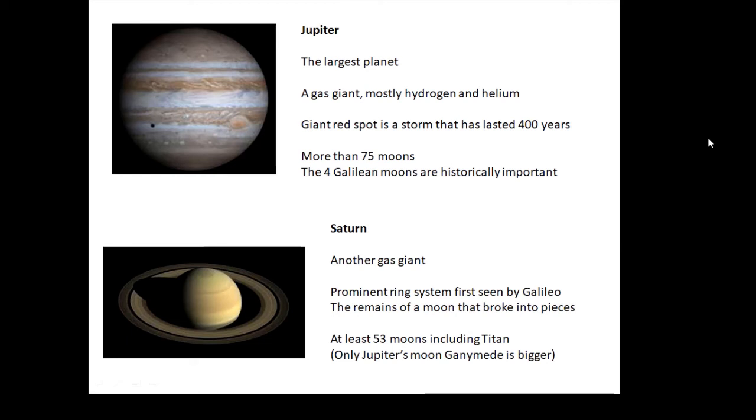Saturn is another gas giant. It has a very prominent ring system that Galileo was the first person to see with his telescope. This ring system we reckon is a moon that got a bit too close and got smashed up into lots of little pieces. Saturn has lots of moons including Titan, which is a very big moon—not the biggest, Ganymede is slightly bigger. They used to think that Titan was the biggest, but they reckon Ganymede is a bit bigger now.